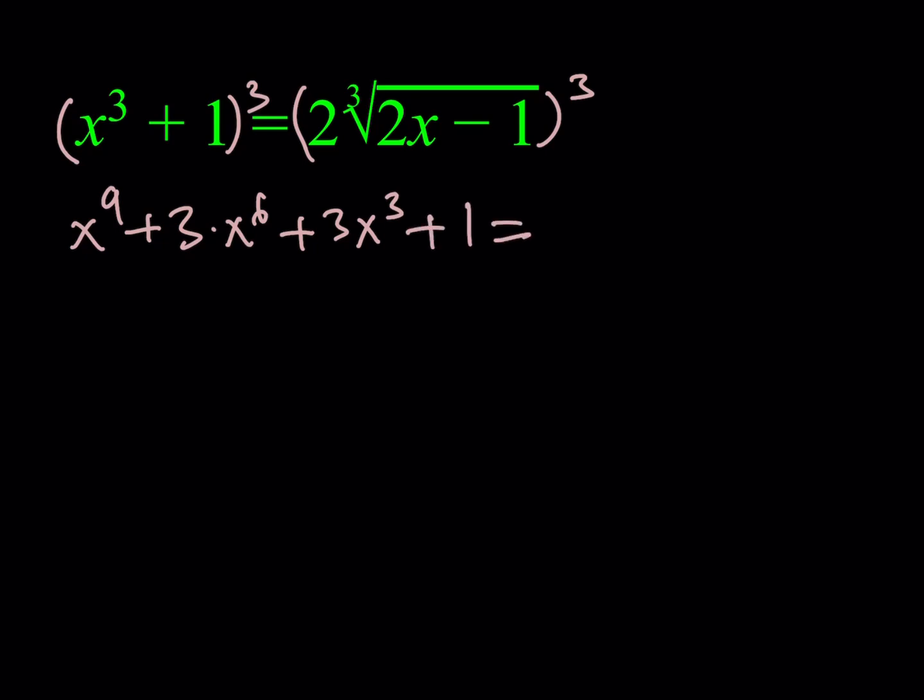On the right hand side, when you cube the radical, you're going to get what's inside, which is 2x minus 1. But it's also going to be multiplied by 2 cubed, which is 8. So we should be getting something like 8 times the quantity 2x minus 1.